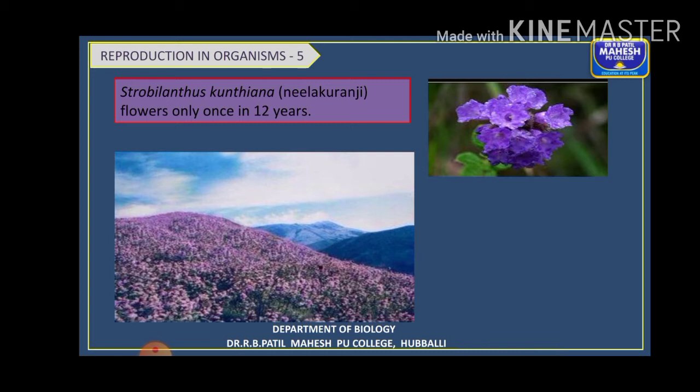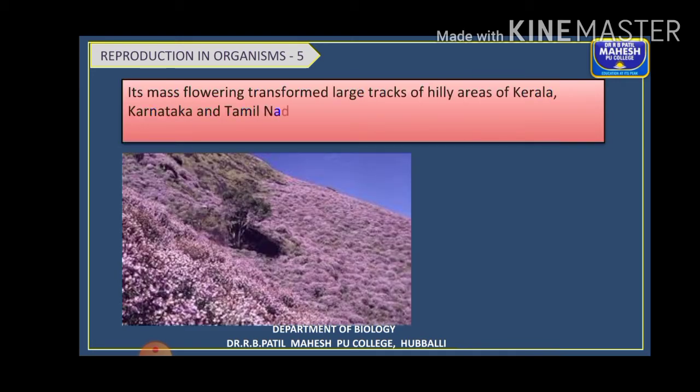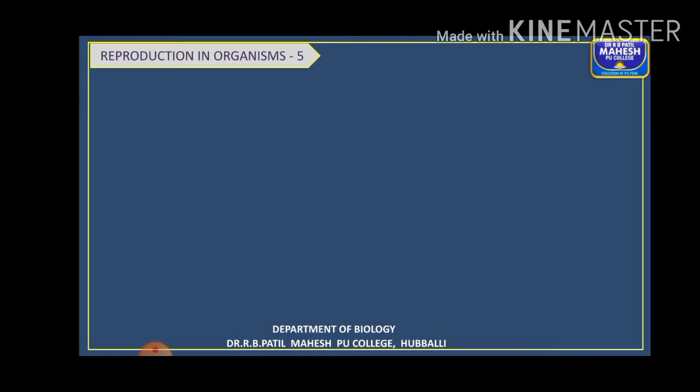The last time neelakurangi flowered was during September to October 2006, then again in 2018, and next will be after 12 years. It is named so because of its mass flowering — it covers the whole hilly areas of Kerala, Karnataka, and Tamil Nadu and attracts a large number of tourists. It gives a completely bluish coloration to those hilly areas, hence the name neelakurangi.